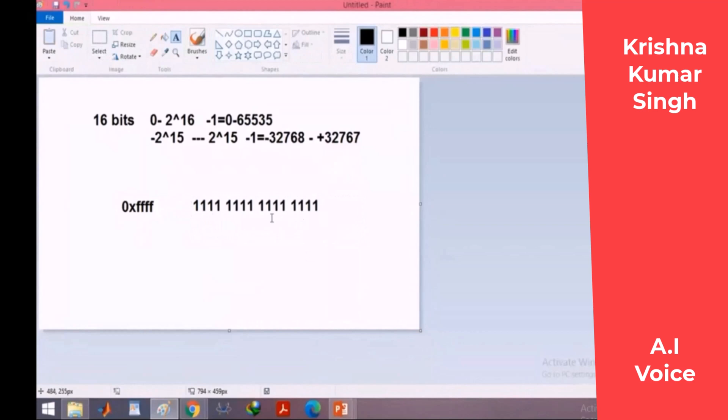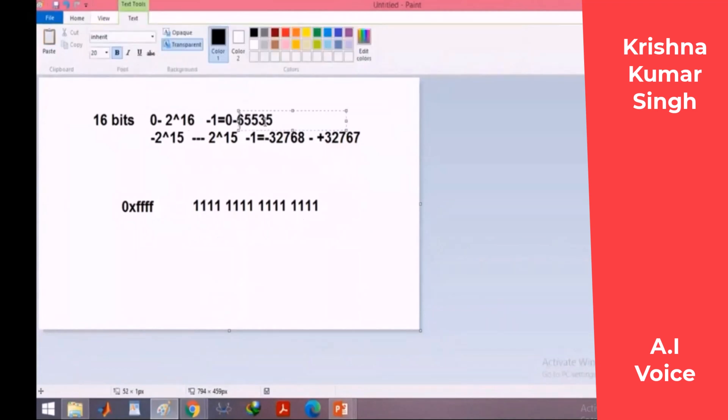It depends on the way that we want to interpret this number. We can interpret it as a signed number or unsigned number. If I consider it as an unsigned number, so this number is the maximum value that I can have in 16 bits: 65,535 or 2 power 16 minus 1.